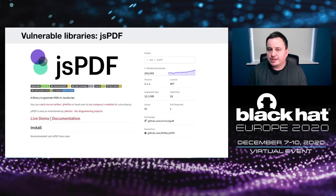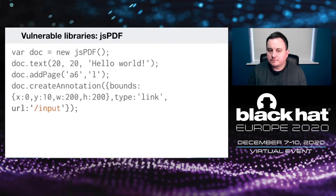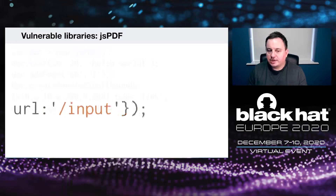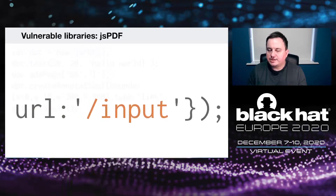The next library was jsPDF, which has over a quarter of a million weekly downloads. You can define annotations using their API, which has a URL property. That URL property was vulnerable to PDF injection like the previous example — your input goes into the URL property and you can inject parentheses to inject your own PDF code.